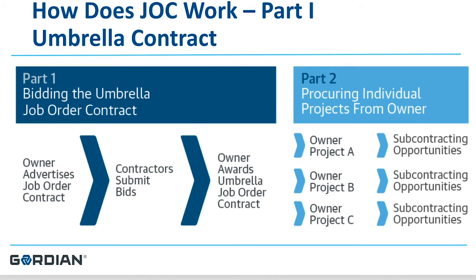Restroom renovations, roofing replacements, HVAC systems — all of those types of scopes of work can be ordered under a job order contract. The scope of work of a job order contract is whatever you can find within the construction task catalog. The price book becomes the scope of work.